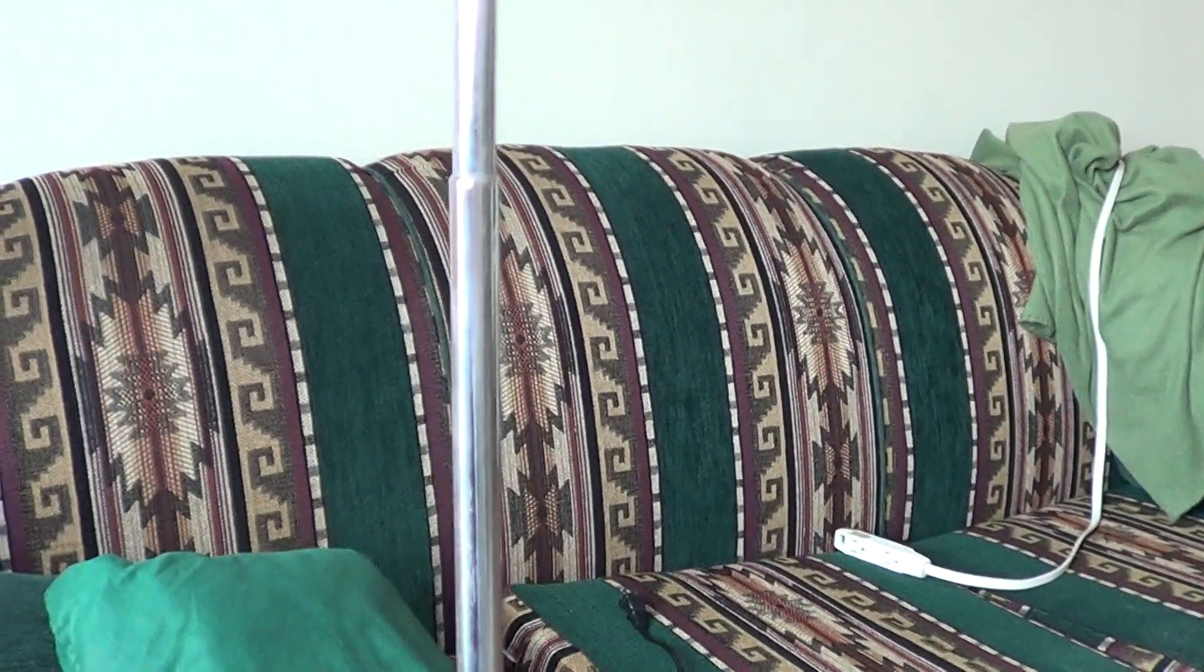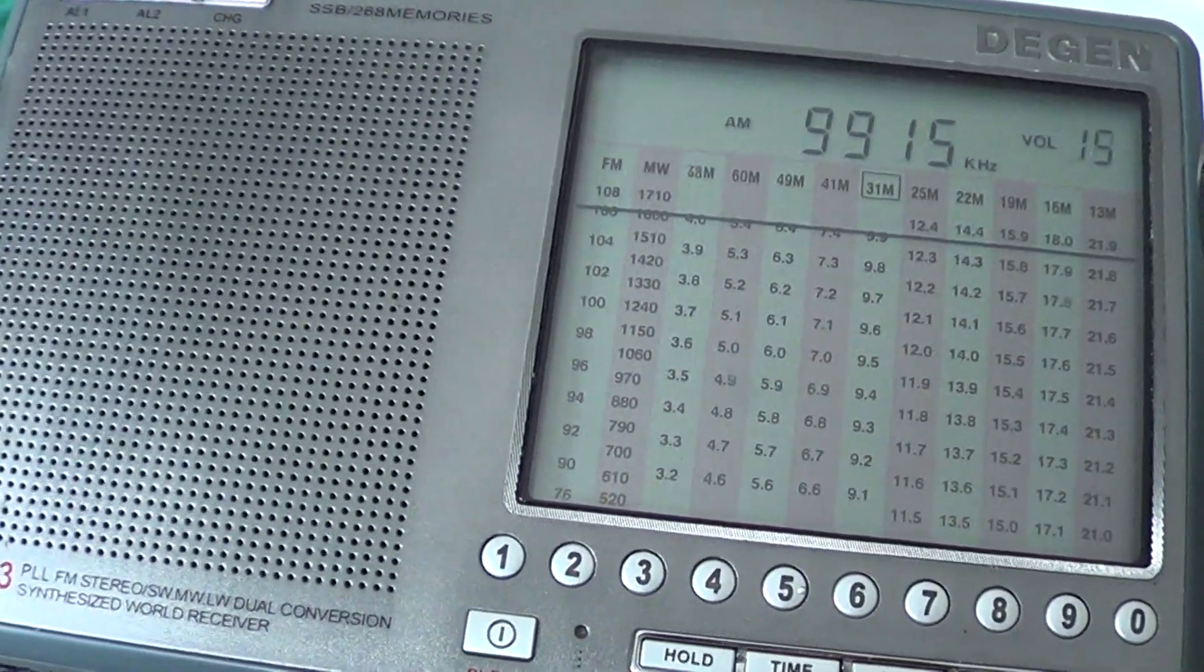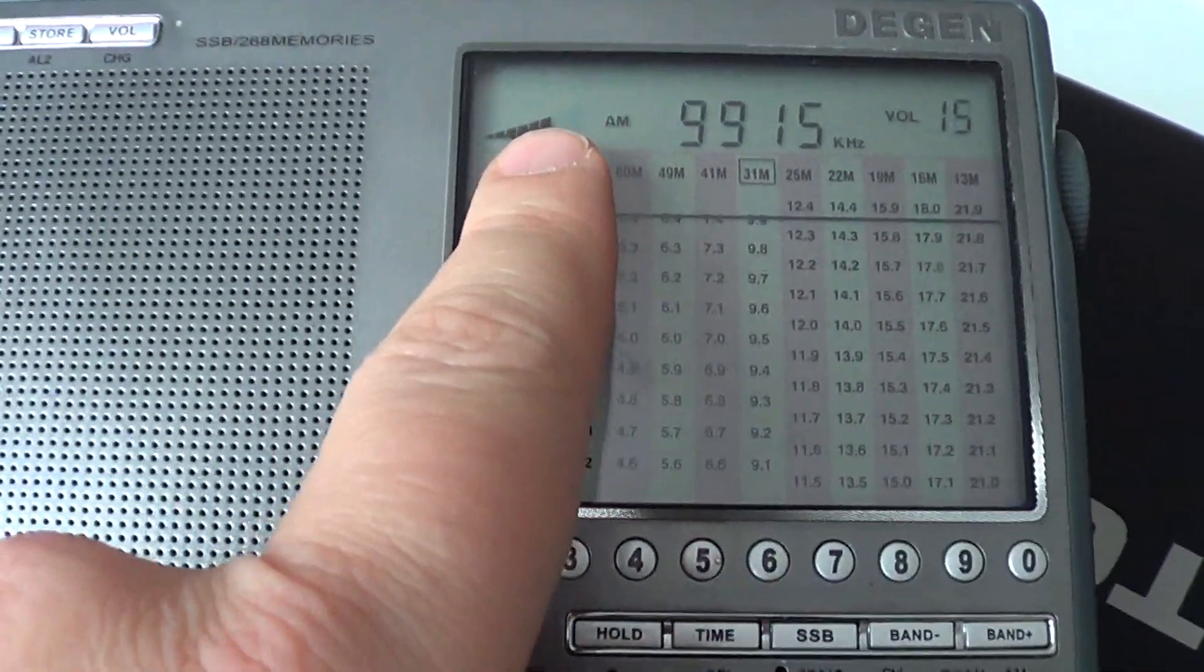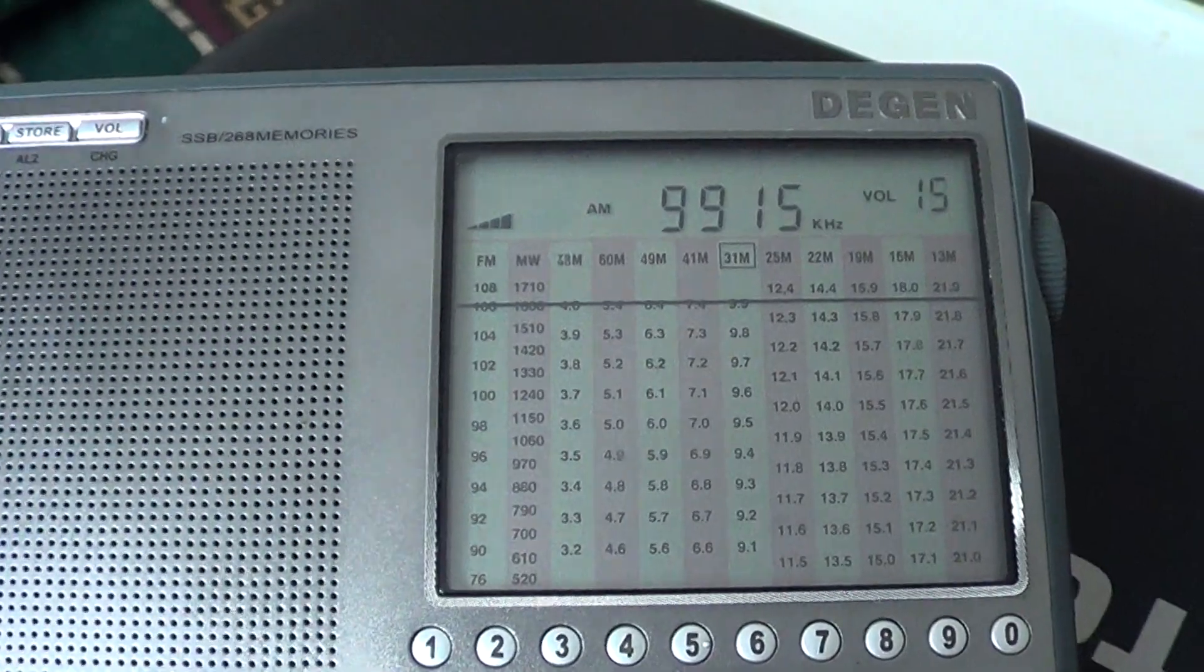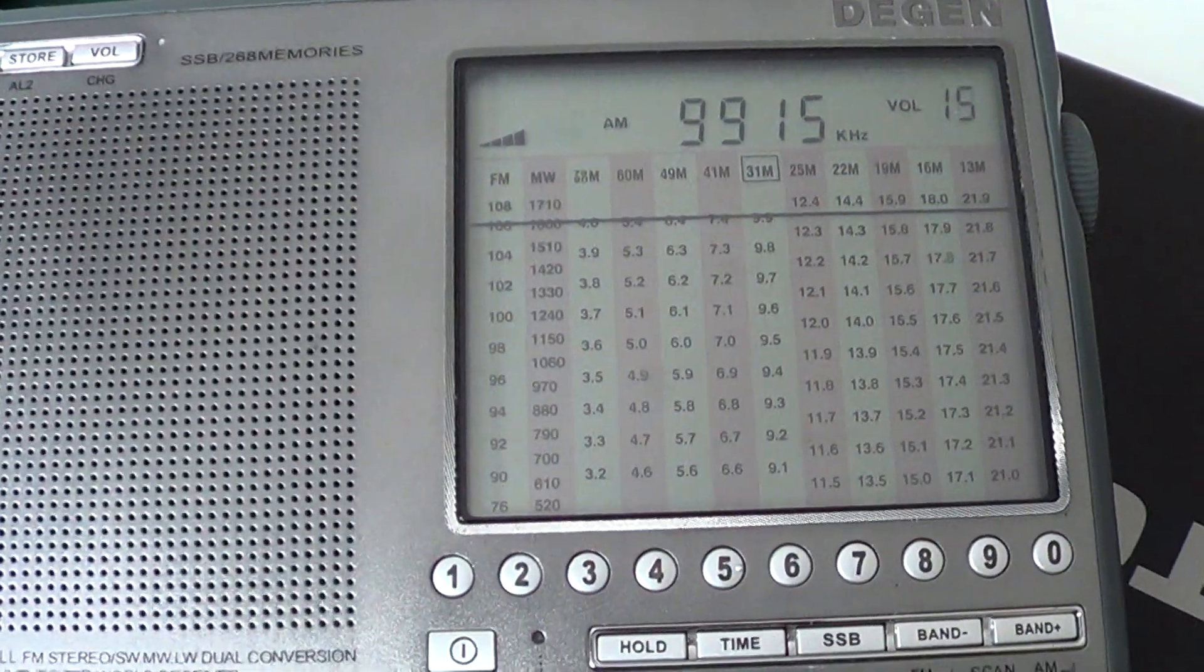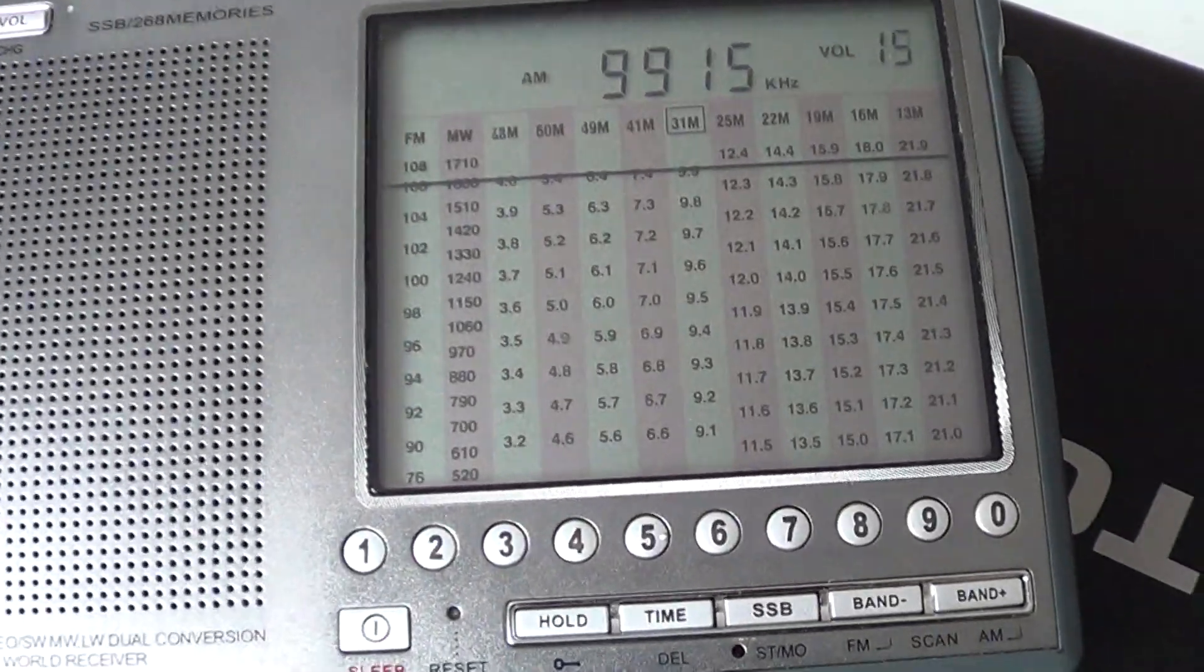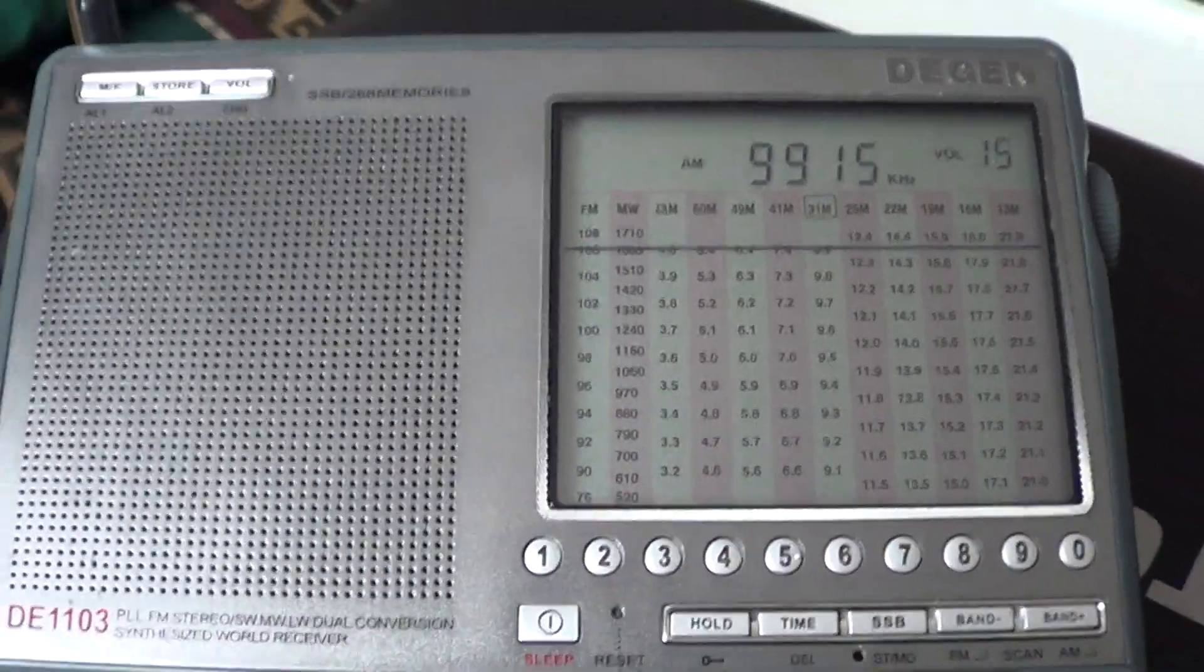So the difference is this: This is BBC, and this is BBC with wire. Look at the signal level, and look at the signal without. As you see, it's much weaker, so you do get much more signal by putting just a piece of wire.